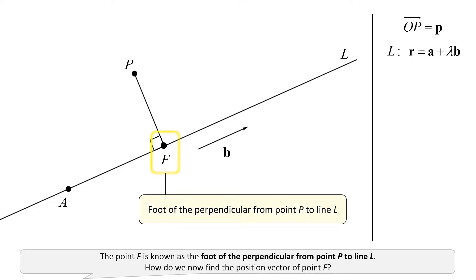The point F is known as the foot of the perpendicular from point P to line L. How do we now find the position vector of point F?